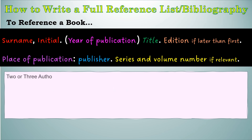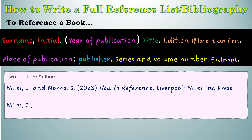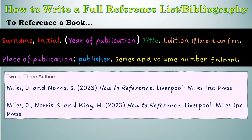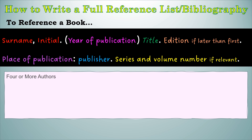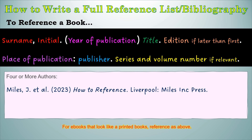For two or three authors it'll look like this. For four or more authors we bring back the 'et al.' so it will look like this. Just a note: for e-books or online books that look like printed books — with the same page numbers and publication information, just scanned into an online web page — you will reference it the same way.